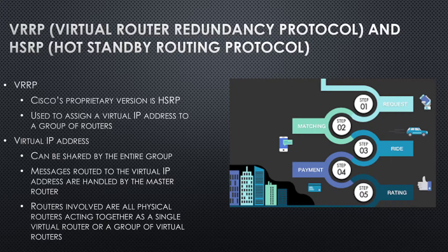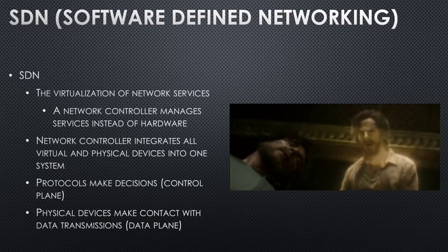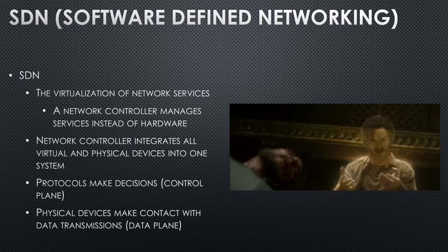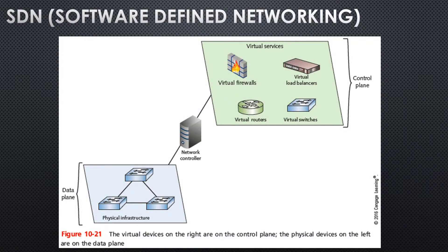Router redundancy protocol — Cisco is pretty big on this, but we're not going to quiz on it. A virtual IP address can be shared, and this allows multiple routers to act as one. You can also virtualize network services: a virtual machine can function as a router, a file server, or some other network controller. Then you can back it up easier, and if something goes wonky, you can easily wipe it and spin it right back up. You build your physical infrastructure, then on your network controller you have virtual services: load balancers, virtual routers, virtual switches, and virtual firewalls.